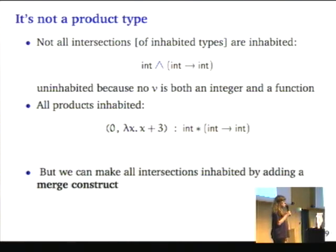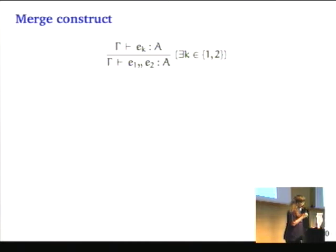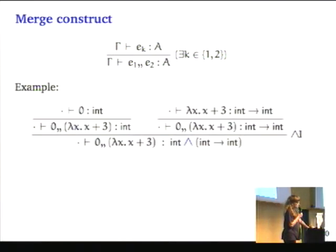But you're going to make all intersections inhabited by having a merge construct. This is kind of a funny thing - it's e1 merge e2. Given type A, you only have to check the type of one of the parts of the merge. For some K, you check that e sub K has type A, and then the whole merge has type A.